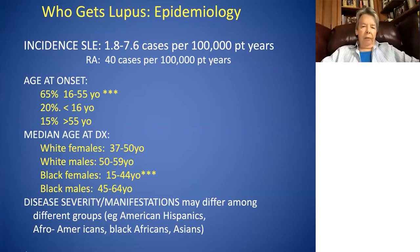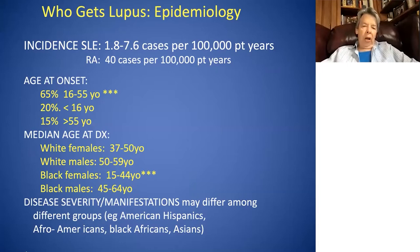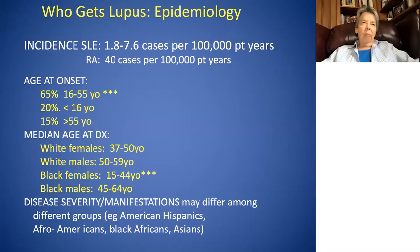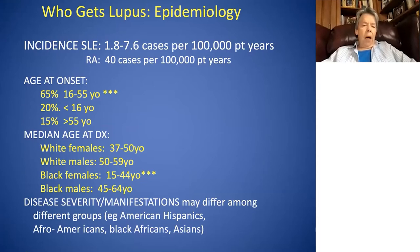Let's talk about the incidence of lupus. It's 1.8 to 7.6 cases per 100,000 patient years. In contrast, rheumatoid arthritis is much more common at 40 cases per 100,000 patient years, meaning you'll see probably up to 30 times more patients with RA in your career than lupus. Lupus in some people's minds is characterized as a rare disease. It can occur at any age, but the vast majority occur in childbearing years — 65% between the ages of 16 and 55.